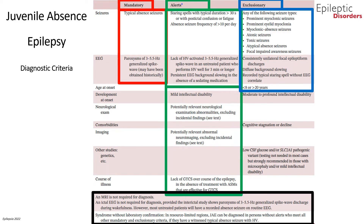An MRI is not required for the diagnosis of JAE. In resource-limited regions, juvenile absence epilepsy can be diagnosed in persons without alerts who meet all other mandatory and exclusion criteria if they have a witnessed typical absence seizure with hyperventilation.